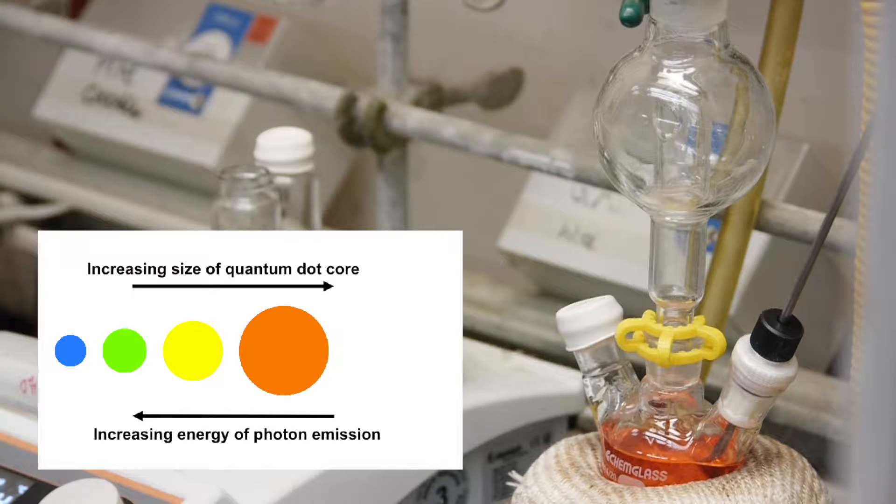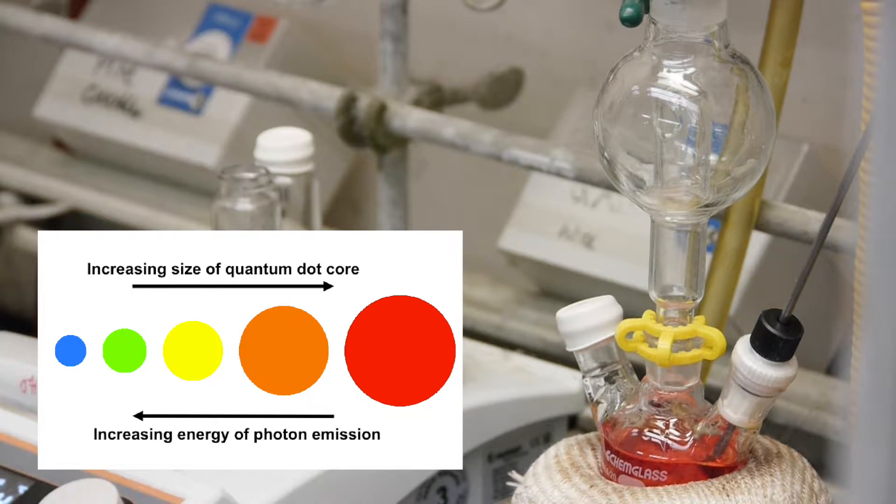The properties of quantum dots are defined by the chemistry of both the core and the surface, since as the size of a quantum dot decreases, the fraction of atoms located at the surface increases.